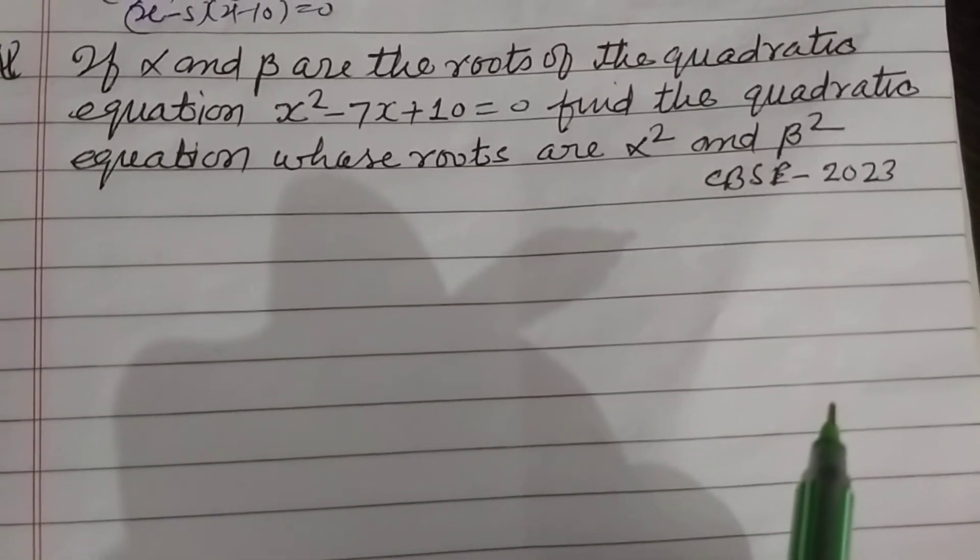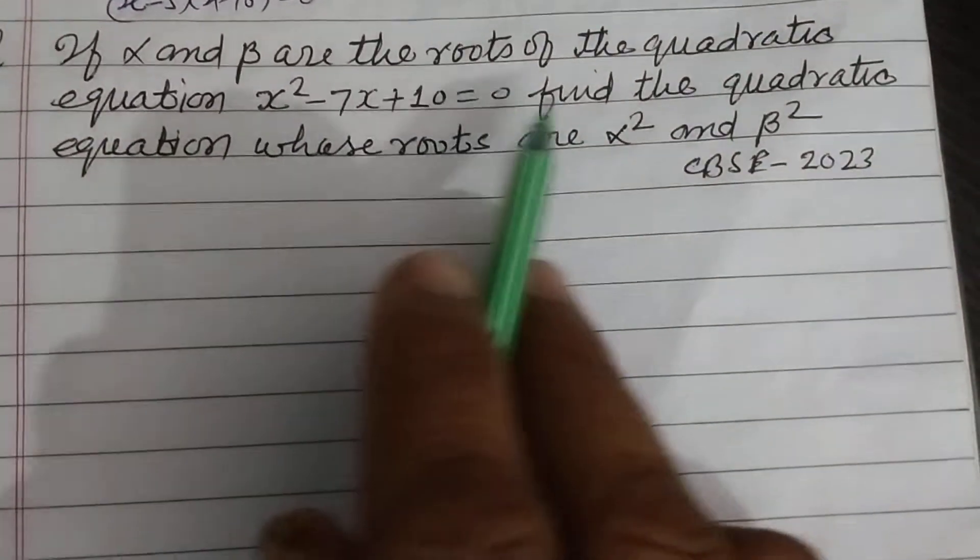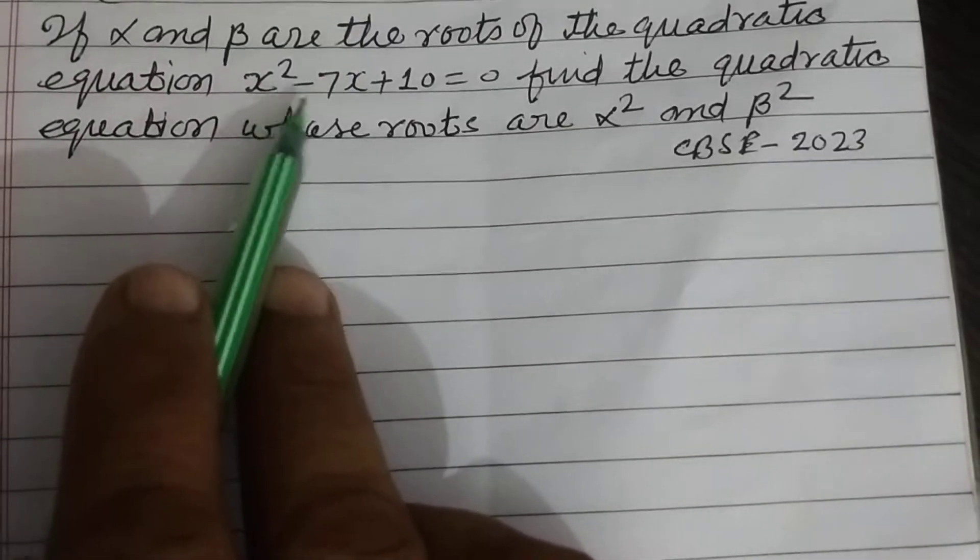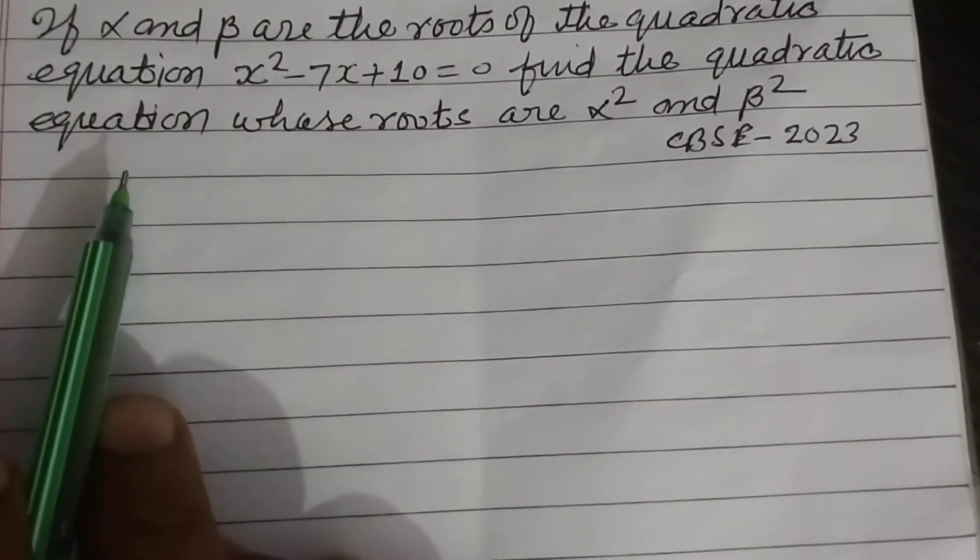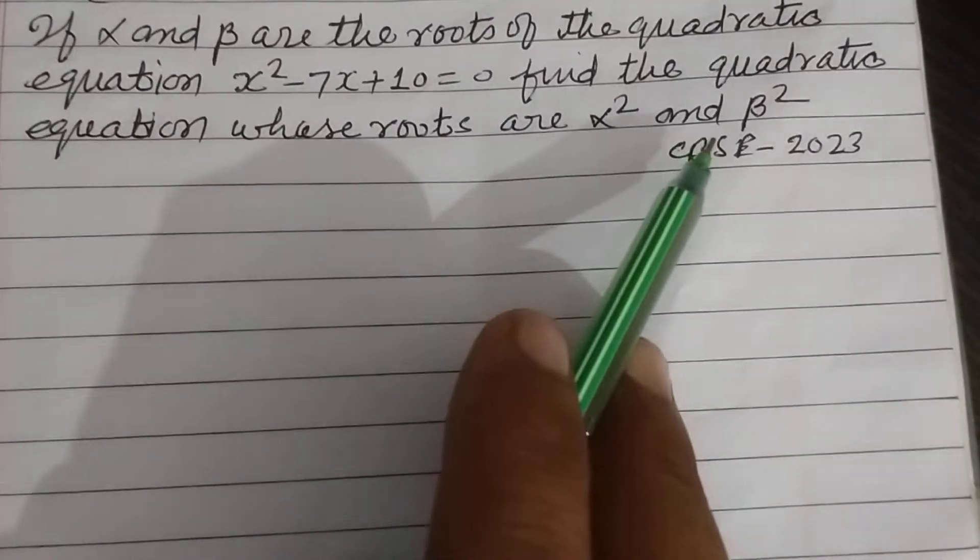Hello student, welcome to this YouTube channel. If alpha and beta are the roots of the quadratic equation x² - 7x + 10 = 0, find the quadratic equation whose roots are α² and β².